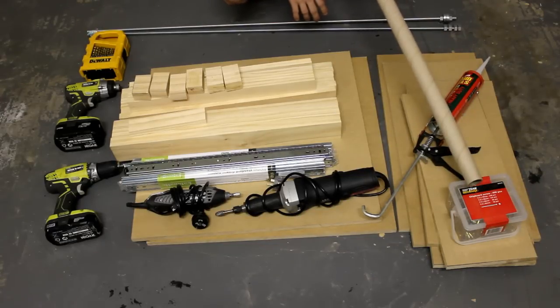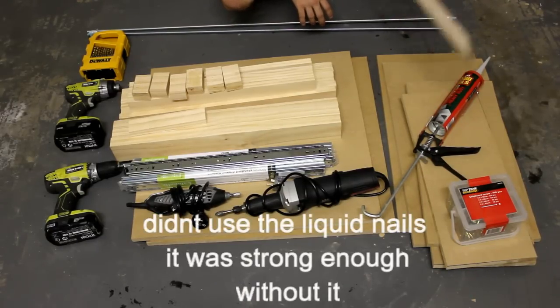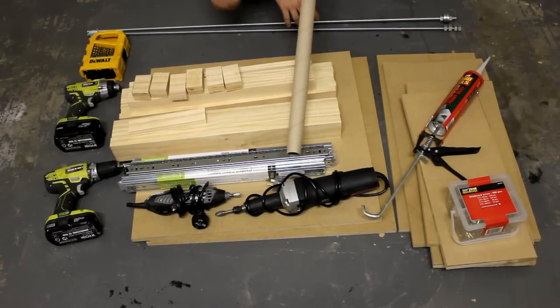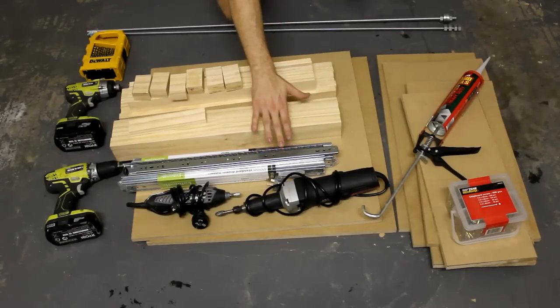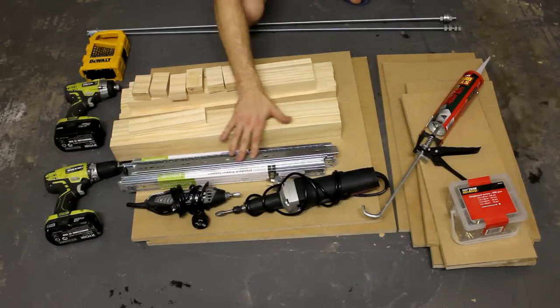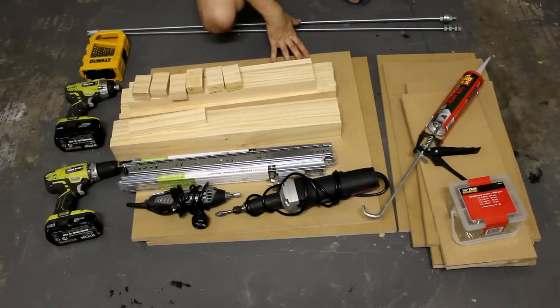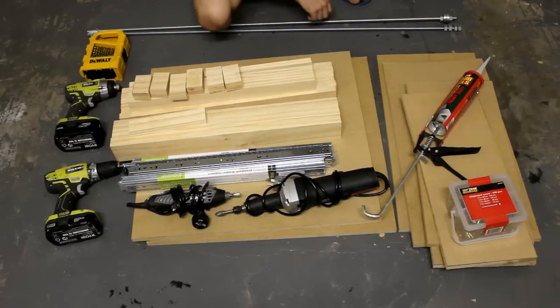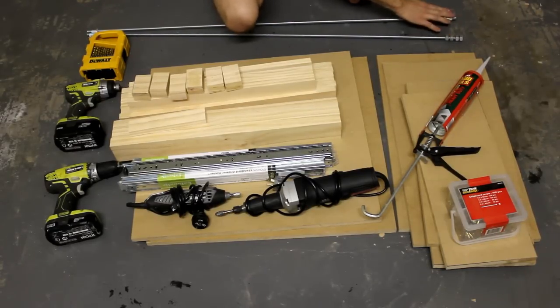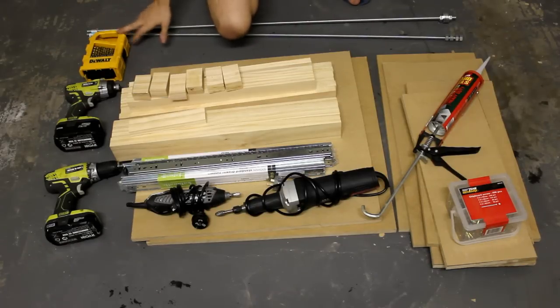To secure it I'm going to be using some MDF screws and some extra strength liquid nails. For smooth linear motion I'm using these heavy duty bearing drawer slides that I got from Bunnings and they cost about 19 bucks each. The main material I'm using is MDF and I've got some tube pine on special as well. I've also got some threaded rod, some nuts, and some washers.